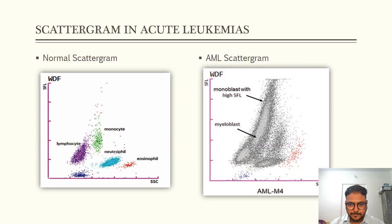Now AML M4 which is myelomonocytic. So here we see two overlapping clusters. First is of myeloblast and second is of monoblast. Monoblast just like lymphoblast have more permeable membrane and that is why there are events with high SFL. Here we see immature granulocytes and here are eosinophils.